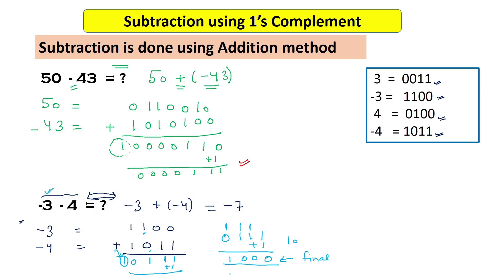After adding the end-around carry, we get the final answer. The last bit is 1, so 11000 is a negative number in ones complement. Inverting the bits gives 00111, which is 7, so the answer is minus 7. This is correct — performing ones complement subtraction as addition gave us minus 7 as needed.